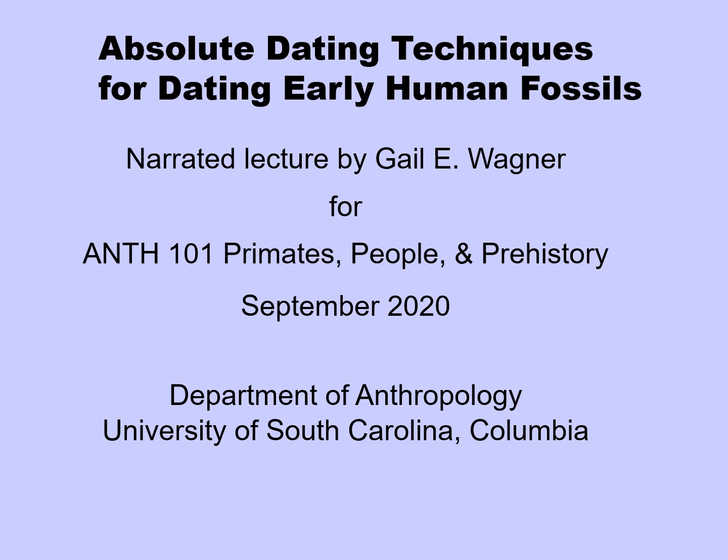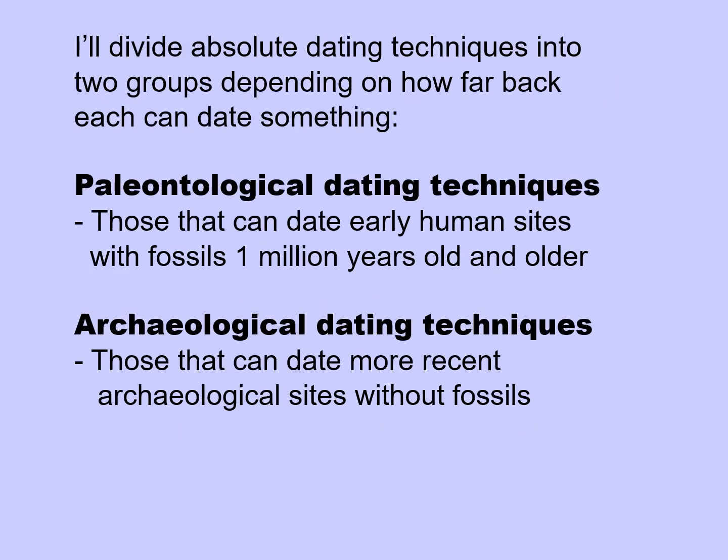Today I'll talk about absolute dating techniques that have been used for dating early human fossils. I'll divide absolute dating techniques into two groups depending on how far back each can date: paleontological dating techniques, those that can date early human sites with fossils 1 million years old and older, versus archaeological dating techniques that can date more recent archaeological sites without fossils.